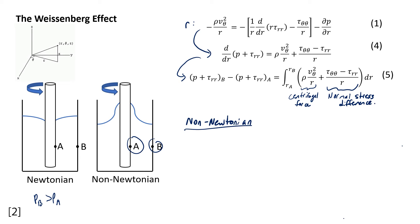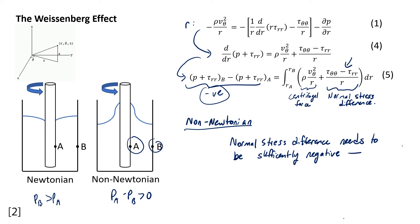For the non-Newtonian fluid that undergoes the Weissenberg effect, this term needs to be negative because pa minus pb needs to be greater than zero. To make this negative, the normal stress difference needs to be sufficiently negative. Since we can't say the normal stresses equal zero for a non-Newtonian fluid, this normal stress difference is actually how we explain the Weissenberg effect — it's this term that contributes negatively, leading to that pressure difference.